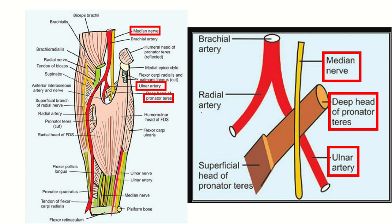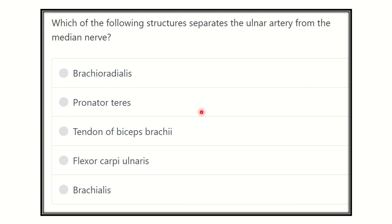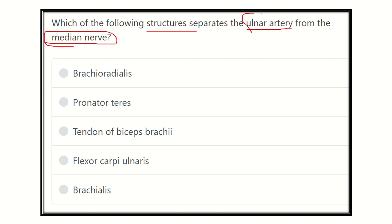Welcome to another question and answer session for the MRCS exam. The question is: which of the following structures separates the ulnar artery from the median nerve? This is a direct question — we have to find the structure which separates the ulnar artery and the median nerve. We know that the ulnar artery and median nerve are very closely located in the cubital fossa.